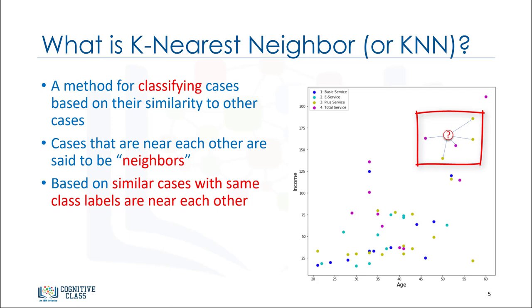Thus, the distance between two cases is a measure of their dissimilarity. There are different ways to calculate the similarity or, conversely, the distance or dissimilarity of two data points. For example, this can be done using Euclidean distance. Now, let's see how the k-nearest neighbors algorithm actually works.